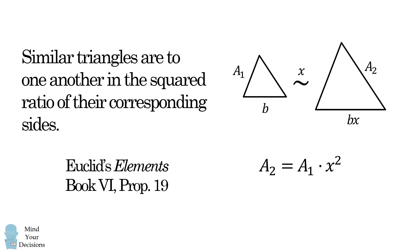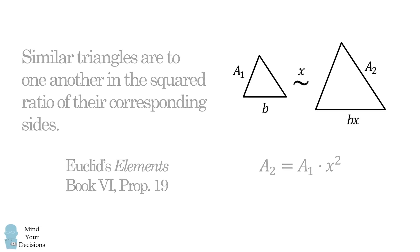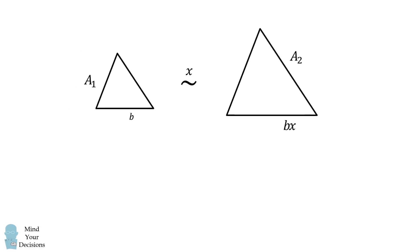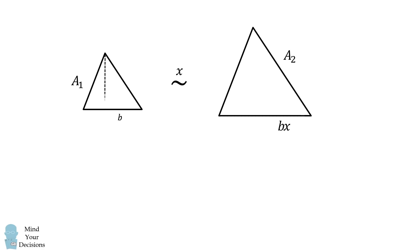This is a formula we all have learned in geometry, but where does it actually come from? Let's quickly prove it. We have these two triangles. Let's now construct the height of each triangle. Suppose this triangle has a height equal to h, which means this other triangle will have a height equal to hx.